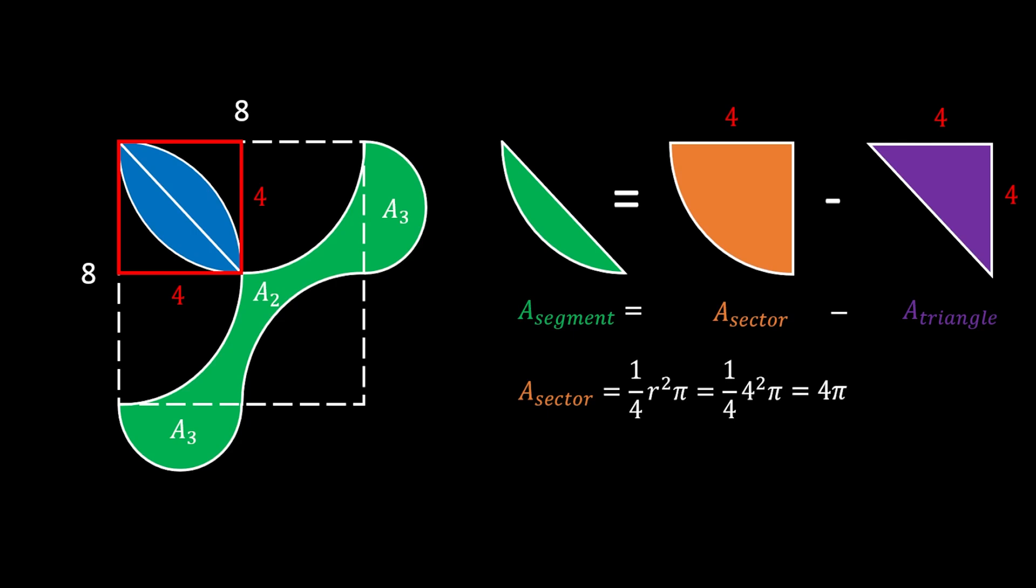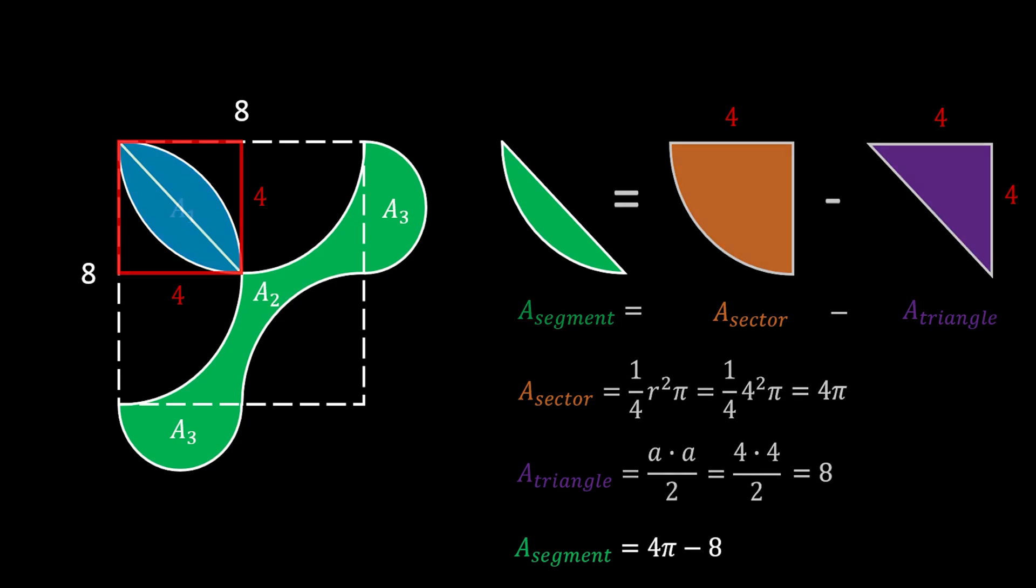Now let's find the area of our right isosceles triangle. We can do it by multiplying its legs and dividing by 2, so that is 4 times 4 over 2, and that is 8. Now our circular segment is equal to 4π minus 8.